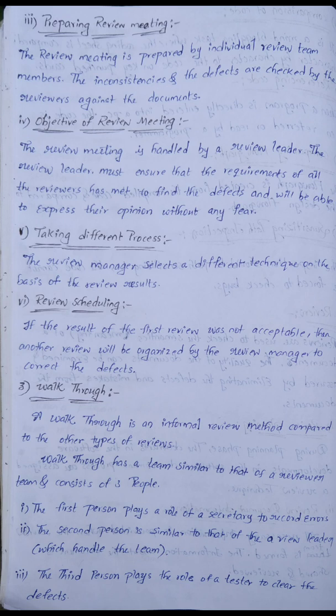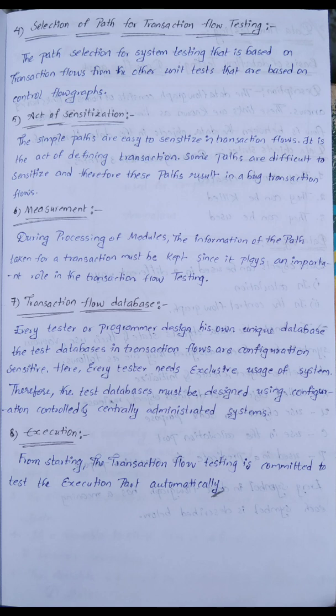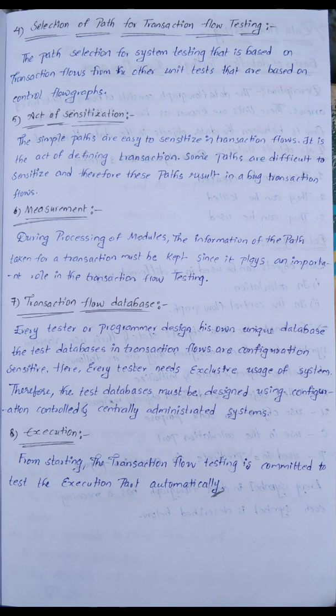Path selection for transaction flow testing: the path selection for system testing is based on the transaction flows, similar to how unit testing is based on control flow graphs. Transaction flow testing involves sensitization — in each case, a decision is made and the complete program must be provided. Some parts are easy to sensitize in transaction flows, while other parts are difficult to sensitize.